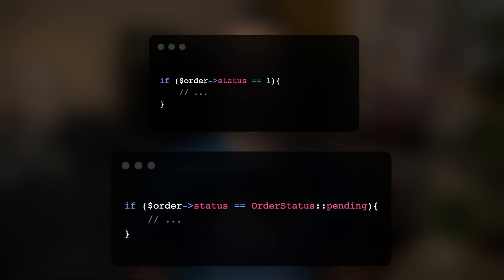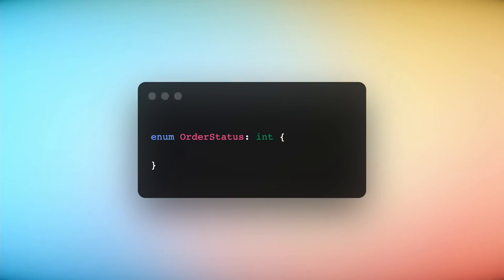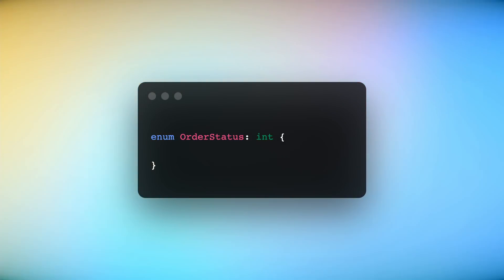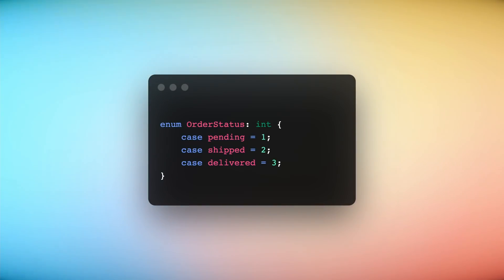Using enums will make your code easier to understand, so instead of having to do something like this, you can do this. This is more readable than having to find the numeric value that represents the pending status in your database to make the comparison. To create an enum in PHP 8.1 you may use the enum keyword followed by the name of the enum and finally the type, which can only be a string or an integer. After that you can add as many cases or possible values as you want using the case keyword.